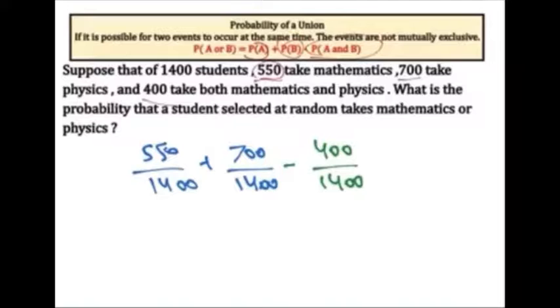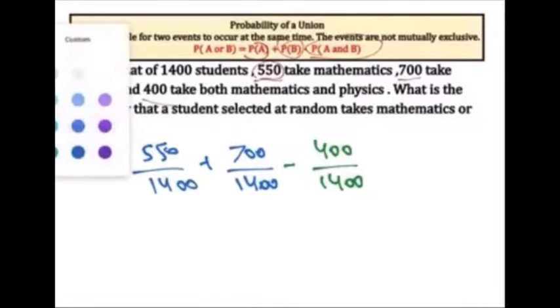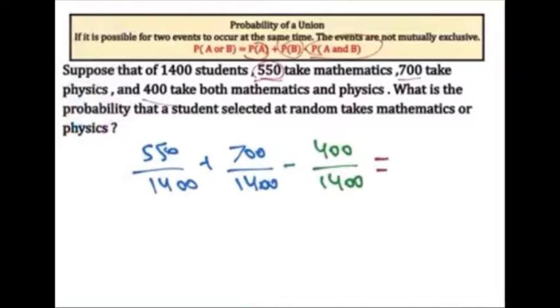So 550 plus 700 minus 400, which will give us 850 over 1400.